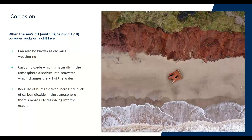You've also got corrosion, which occurs when the sea's pH — anything below seven — corrodes rocks on a cliff face. This is also known as chemical weathering. Carbon dioxide, naturally in the atmosphere, dissolves into seawater. Water and carbon dioxide combine to form carbonic acid, a weak acid that breaks into hydrogen ions and bicarbonate ions. Human-driven increased levels of CO2 mean more is dissolving into the ocean. The ocean's average pH is now 8.1, but as the ocean continues to absorb more CO2, the pH decreases and the ocean becomes more acidic. Climate change is definitely one of those factors.